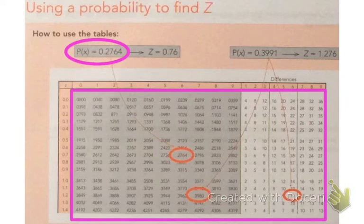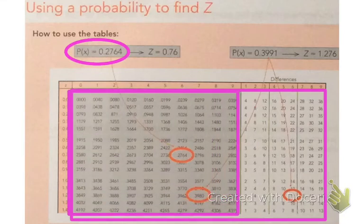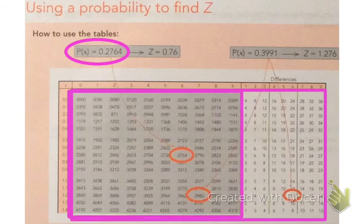So all of those numbers inside there are our probabilities. And we're going to start by looking at the numbers just inside this range, up to our two decimal point range.